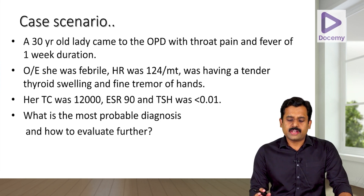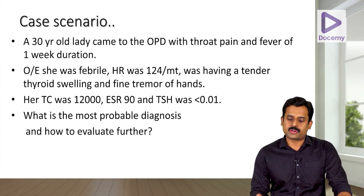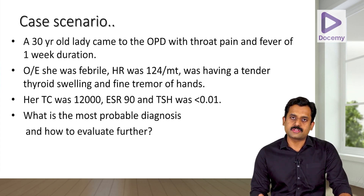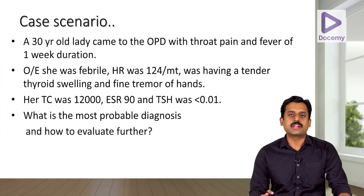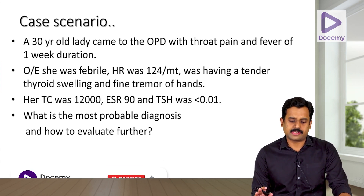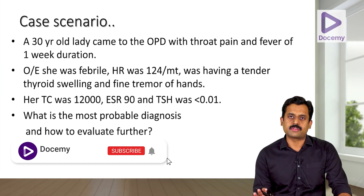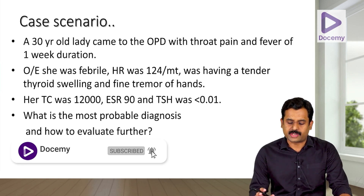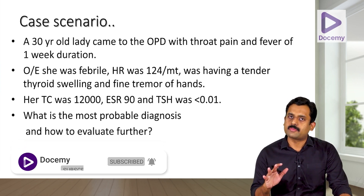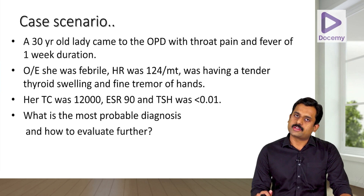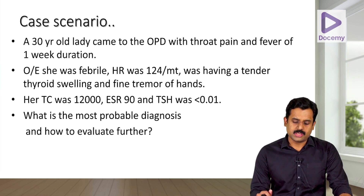A 30-year-old lady came to the OPD with throat pain and fever of one week duration. On examination she was febrile, her heart rate was 124 per minute, she had a tender thyroid swelling over the anterior aspect of the neck, and she had fine tremors of the hands.